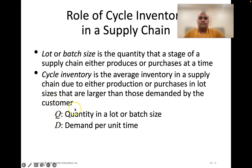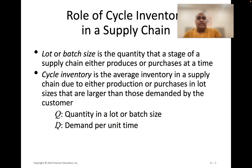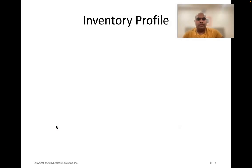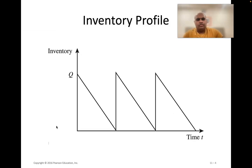Throughout this chapter, we'll use Q to represent the quantity in a lot or batch size, and D to represent demand per unit time. Capital D typically represents annual demand, and lowercase d represents monthly, weekly, or daily demand — you'll get used to that as we go through the chapter.